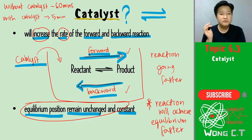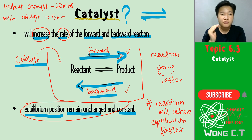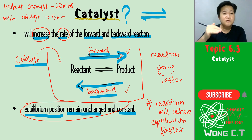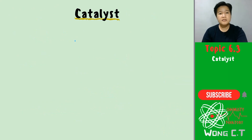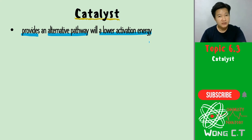Your equilibrium position, your KC, KP - everything will remain the same. You will still reach the same equilibrium, just in a shorter time. Other than increasing the rate of the forward and the backward reaction, catalyst will also provide an alternative pathway with a lower activation energy.